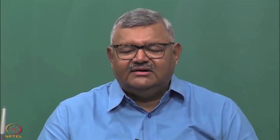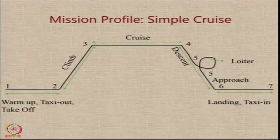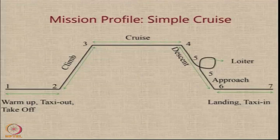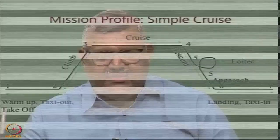After the cruise phase, there is a descent phase when you are approaching to land. During descent, you might have to hold or loiter at the destination airport. Once cleared to land, there is an approach segment followed by the landing segment. After landing, you taxi into the terminal or gate. Each leg of the mission profile is assigned numbers — for example, warm-up taxi-out and takeoff is leg 1 to 2, then 2 to 3, 3 to 4, 4 to 5, 5 to 6, and 6 to 7. For a transport aircraft, there is also a diversion requirement involving another climb, cruise, descent, loiter, and final landing.